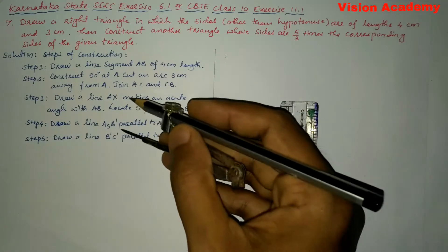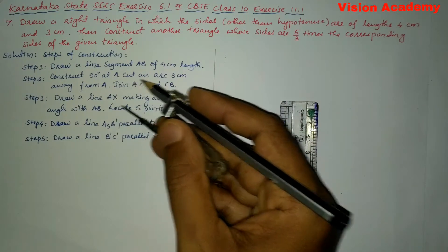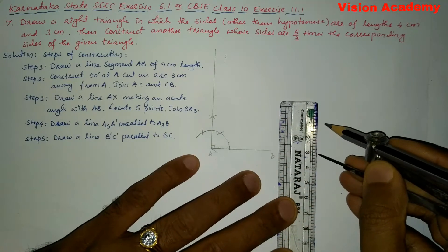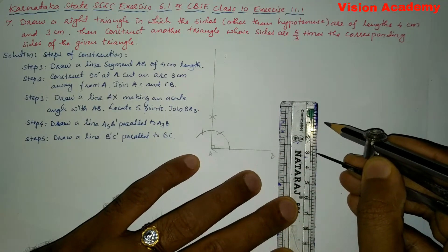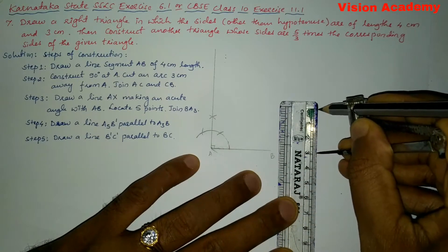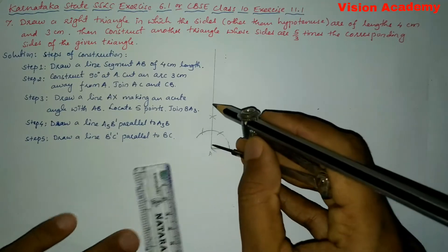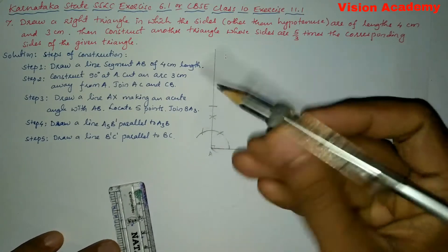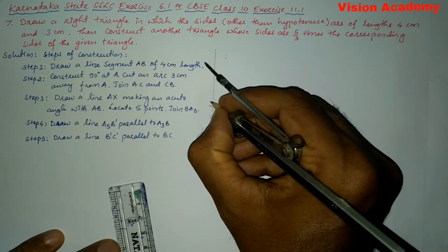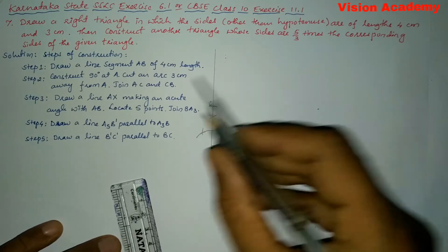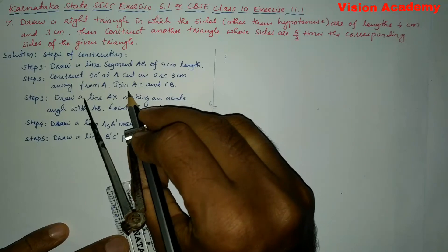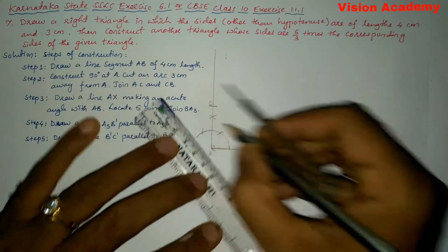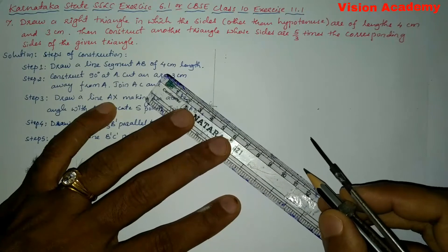In this second step they have given: cut an arc 3 cm away from A. So let us take 3 cm and from A we are going to cut. Let us name this point as C. Now we will go for the next step: join AC and CB. AC is already joined, so join CB.